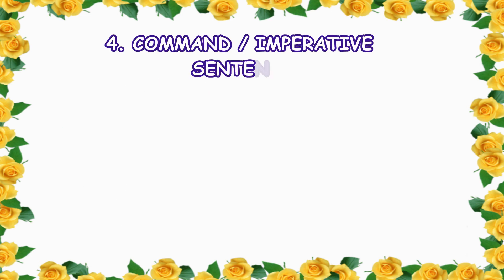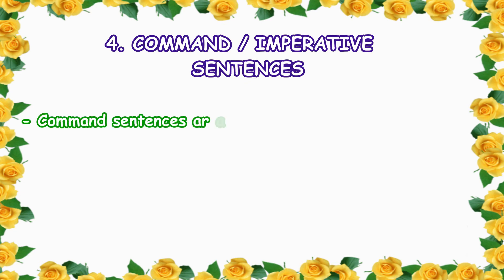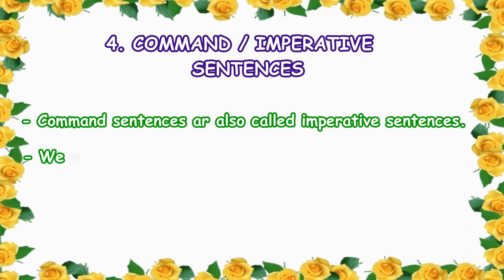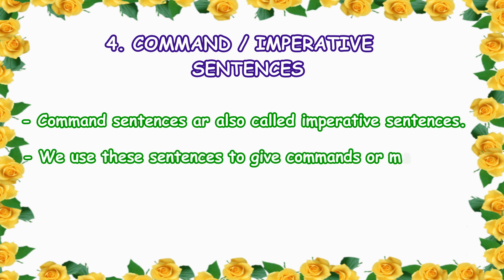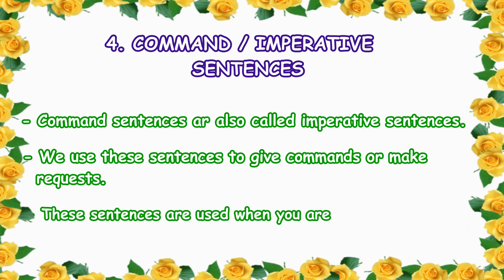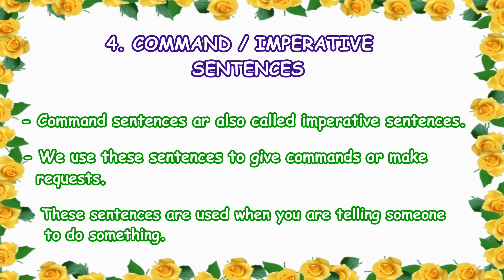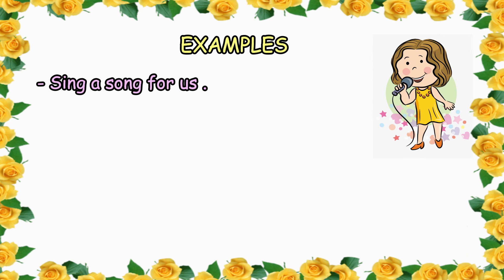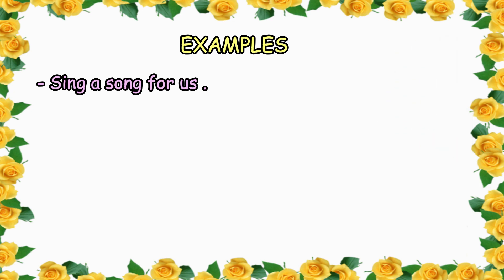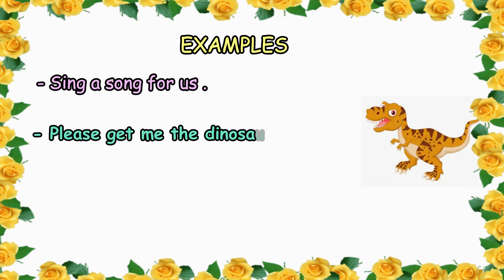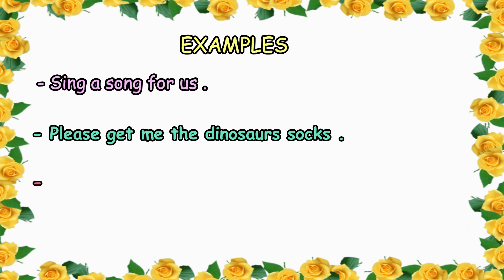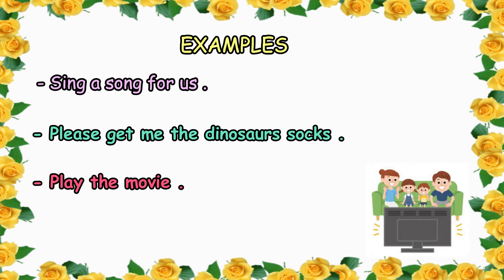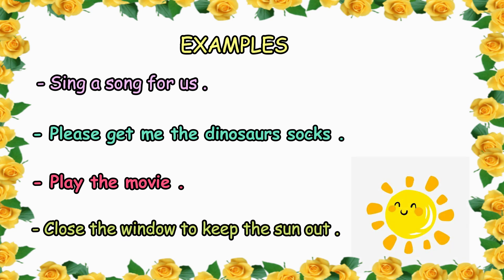Our last type is command or imperative sentences. Command sentences are also called imperative sentences. We use these sentences to give commands or make requests — these sentences are used when you are telling someone to do something. For example: sing a song for us — this is a command because we are asking someone to sing for us. Or: please get me the dinosaur socks — this is a request. Or: play the movie, or close the window to keep the sun out. So all these are command sentences.